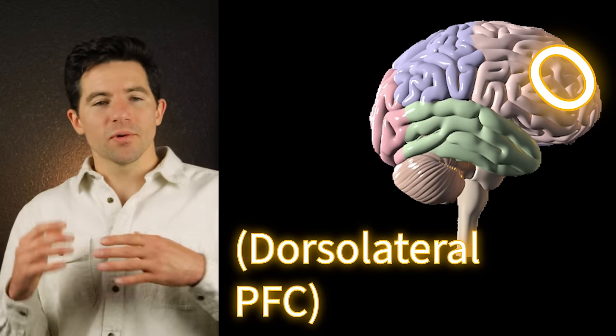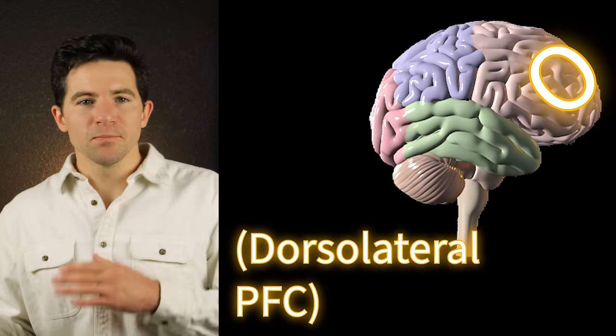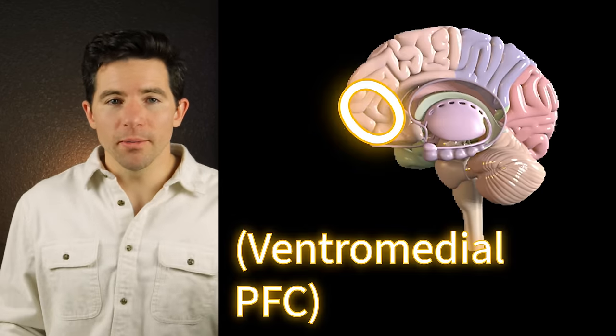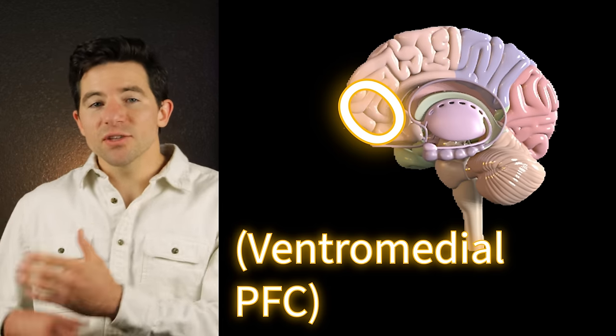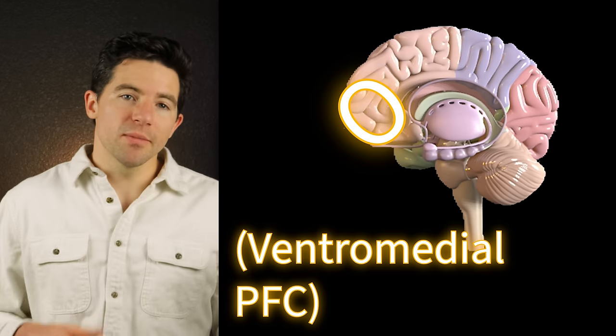For example, the dorsolateral prefrontal cortex is important for careful reasoning and planning, while the ventromedial and orbital frontal cortex are important for evaluating options as well as experiencing and regulating emotions. Now, you'll notice that I'm using phrases like brain area X is involved in or important for function Y, rather than saying that brain area X causes function Y.